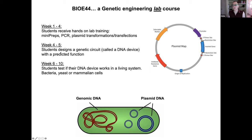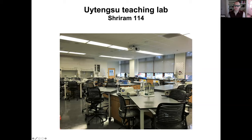From week four to week five, students design a genetic circuit — a plasmid, which is a circular piece of double-stranded DNA. Students design their own plasmid with a promoter that can express some kind of gene. After the design part, I do the cloning, and if it works, from week six to ten students test their genetic device and verify that it worked correctly.